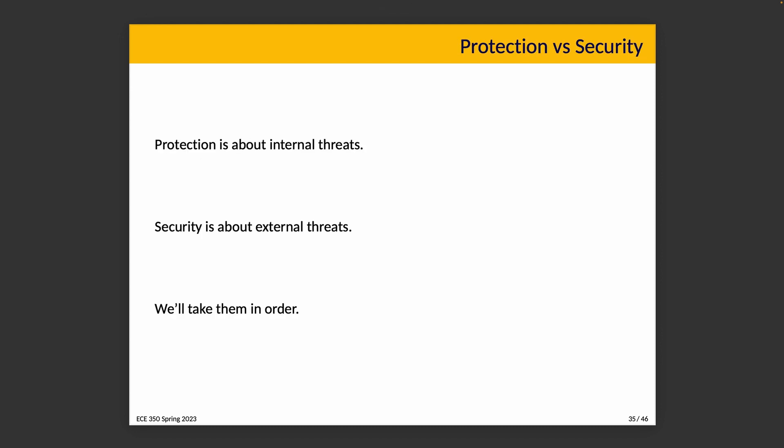I've said security at this point, but actually a lot of our discussion is really about protection instead. Protection is about internal threats — making sure that user Morgan cannot access the private files of user Taylor. Security is more about external threats, making sure that evil hackers don't gain access to the system. We'll actually talk about these things in that order: protection, then security.